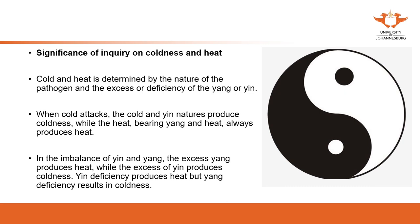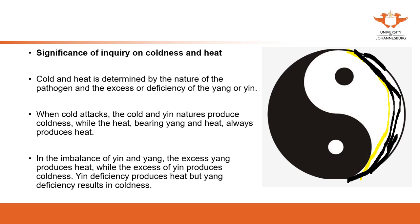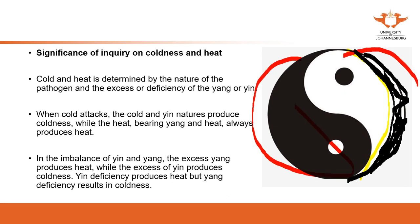From this slide, we're going to have a quick overview of the significance of asking about coldness and heat — what the coldness and heat can represent. The coldness and heat are determined by the nature of the pathogen and the excess or deficiency of yin and yang. If we have yang deficiency — which means we don't have enough yang in the body — from the yin/yang circle, if we are missing part of the yang, yin and yang are not balanced. For this amount of yin, we don't have enough yang to balance, so we have yang deficiency.